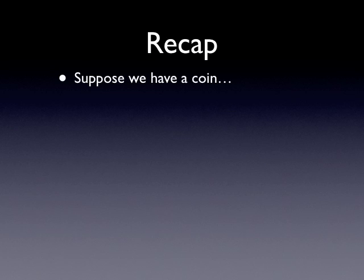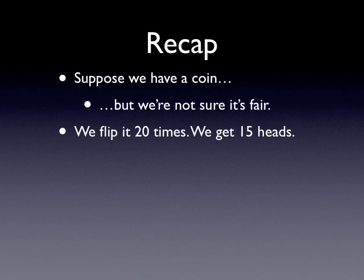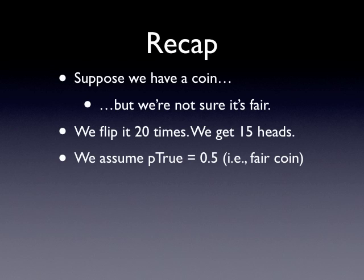Going on with the recap. For example, suppose we have a coin — we're going to change Aunt Belinda slightly. We're not sure it's fair. So we flip it 20 times and we get 15 heads. Sounds suspicious, but we're not sure if that could be due to chance or not. So even though we think it might not be fair, we assume that the true probability, which I call p-true, is 0.5, because that's the null hypothesis — it's a fair coin. Then we compute a p-value.